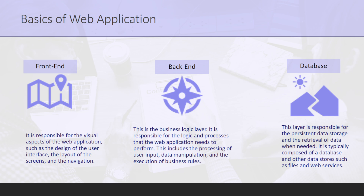The third tier inside a web application is the database. This layer is responsible for persistent data storage and retrieval of data when needed. For example, on Fiverr.com, different types of data are displayed from the database. It is typically composed of a database and other data sources such as files. We will discuss relational and non-relational databases as part of this tier.